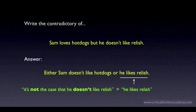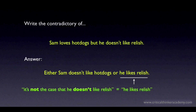That's about all you need to know about negating conjunctions. The basic rule is easy to remember: not (A and B) is equivalent to not A or not B. We'll see in the next video that the rule for the contradictory of a disjunction is very similar. See you later.